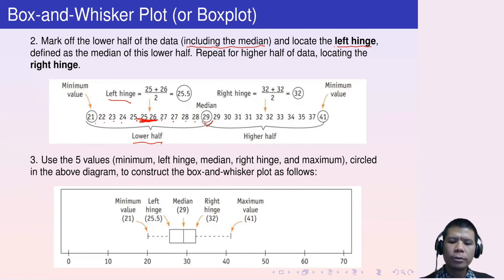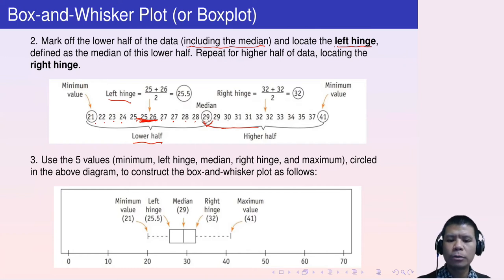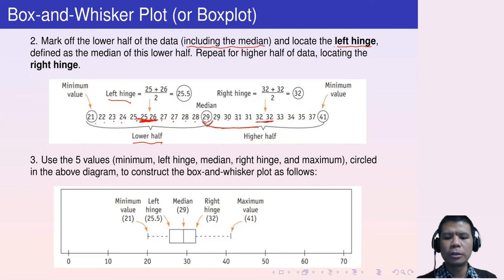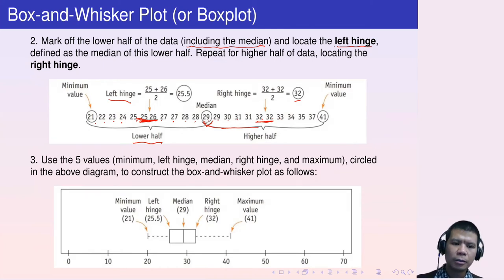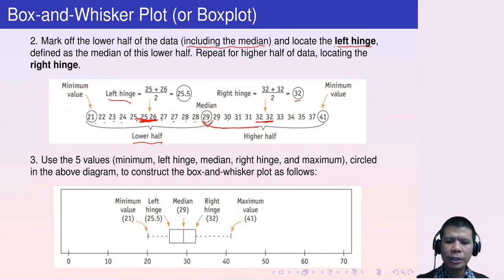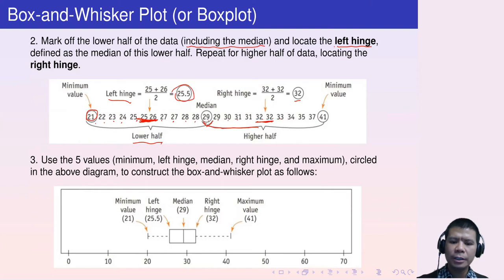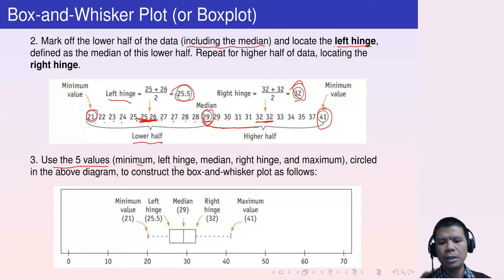Similarly, we mark off the upper half including the median 29. There are also 12 values in the upper half. The median of the upper half — the middle two values are both 32, so the average is 32. Therefore, the right hinge is 32. Now we have all five numbers: the minimum, left hinge (25.5), median (29), right hinge (32), and maximum.